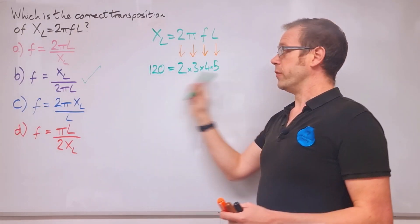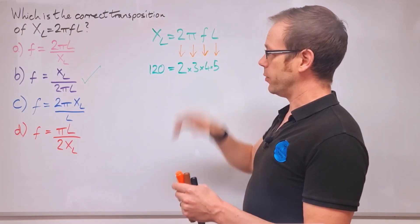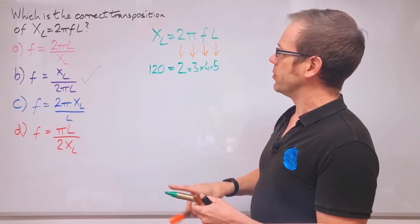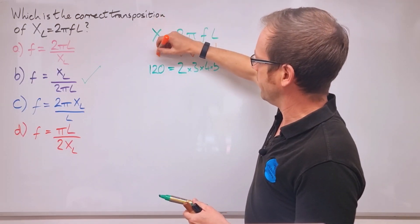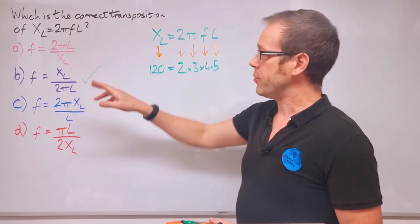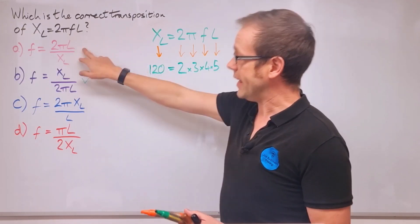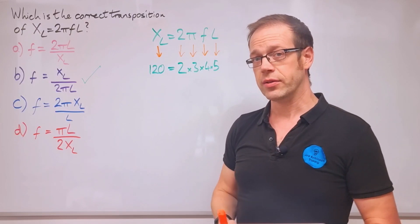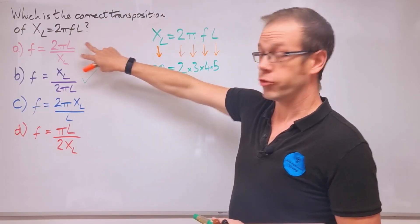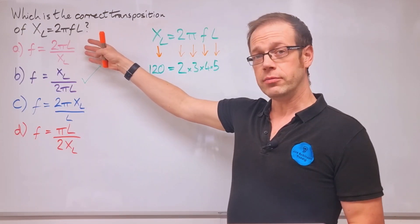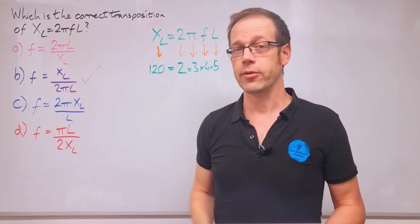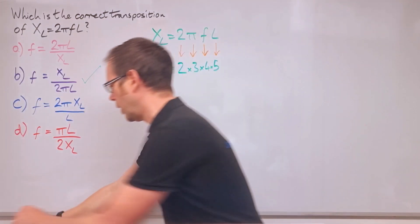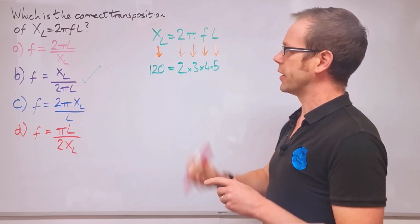Feel free to use your calculator to figure that out — that's not a problem. This method will work for other forms of transposition as well. Now we know every symbol has a value, and that allows us to put these numbers into each of the four answer options and do calculations to figure out if they are true. If it's true when we put these numbers in, that is the right answer.